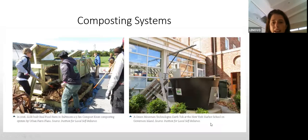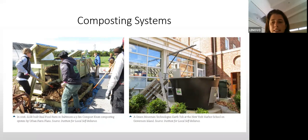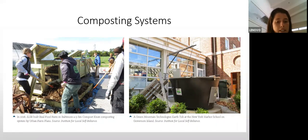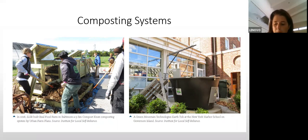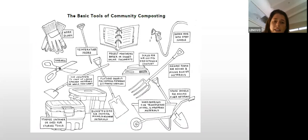On the right-hand side is a vessel system — an Earth Tub — which has a vertical auger and a fan that composts food and garden waste. It's completely contained and needs to be plugged into an electrical system to work. On the left-hand side, pre-mixed materials are being put into compost bins for contained composting on a small-scale site.